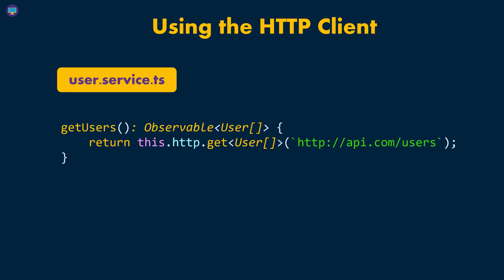On the second line, we call this.http — remember, we defined it in the constructor, which makes it a member of the class, so we use the this keyword to access it. On that HTTP object, we access the get method because we're trying to make a GET request. The HTTP client also contains post, put, patch, delete, and a couple more, but since we're trying to retrieve data, we're calling get.